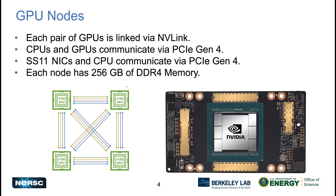All the GPUs on a GPU node are connected by NVLink — essentially an all-to-all connection — and the CPUs and GPUs can communicate via the PCIe Gen 4 bus. Each node also contains four Slingshot 11 NICs connected to the CPUs via PCIe Gen 4 as well. The 256 GB DDR4 is the RAM on the node, separate from GPU memory. Each GPU has 40 GB or 80 GB of high bandwidth memory, while the host side has 256 GB DDR4.